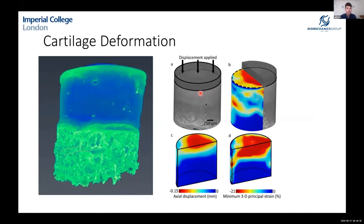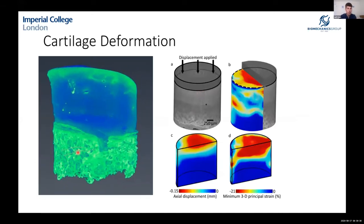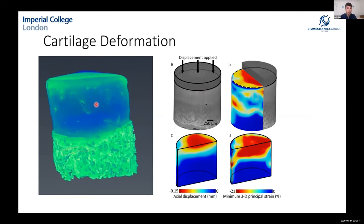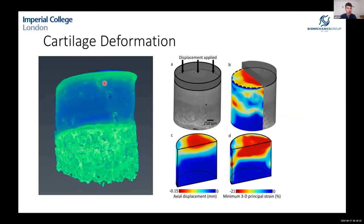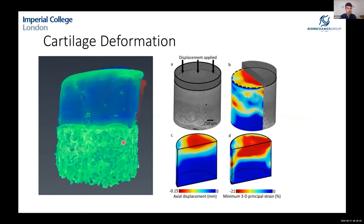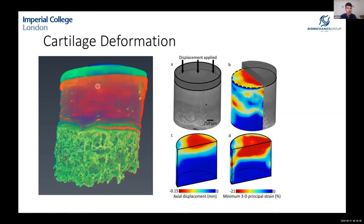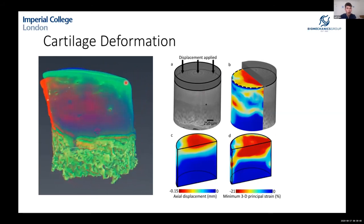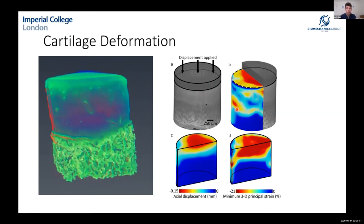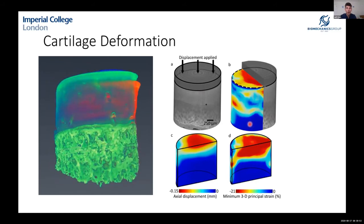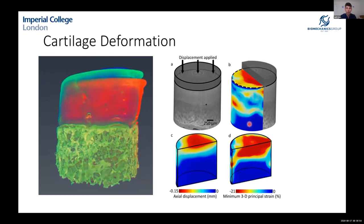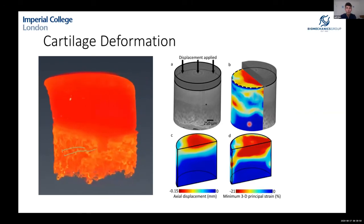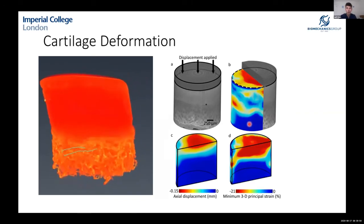This video shows the bone at the bottom with cartilage on top — the first scan, and then the second scan shown in red with further compression applied. On the right-hand side you can see our results showing the nice 3D structure of the biomechanics we can visualize.